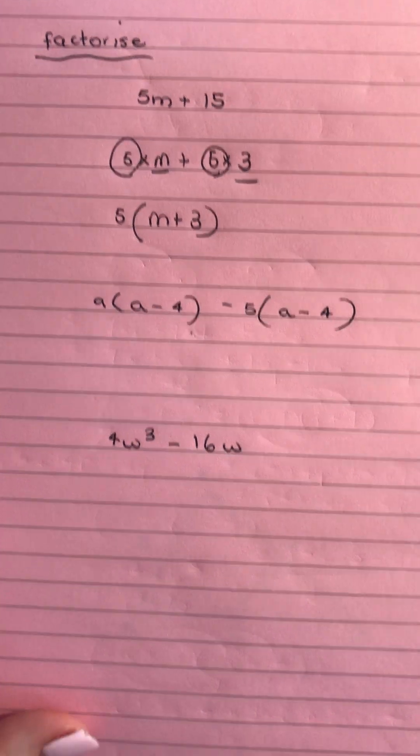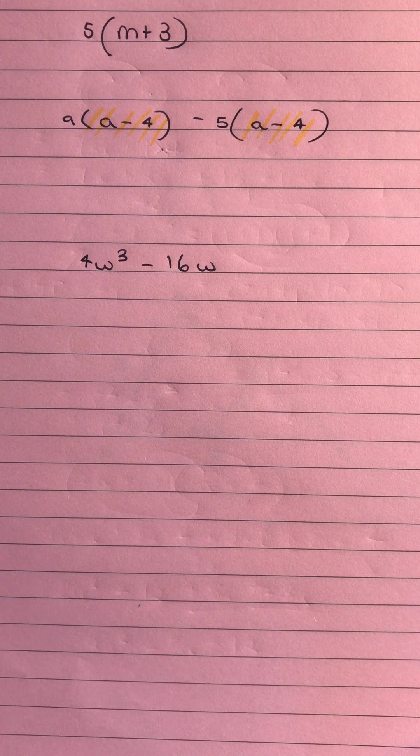So then in the next one we have a little bit different. This is one that some students find a little bit tricky. So we've got a outside of a minus 4, 5 outside of a minus 4. We have this common factor of a minus 4.